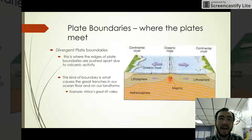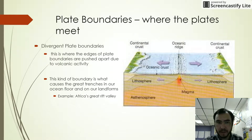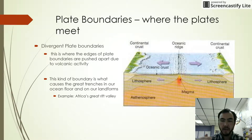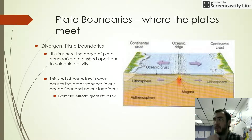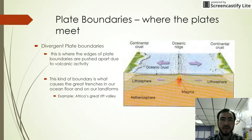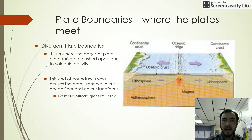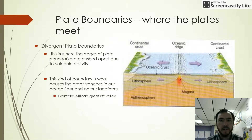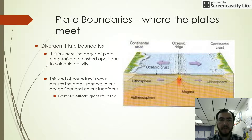Lastly, we have divergent plate boundaries. A divergent plate boundary is where the edges of the plates move away from each other. On one side of a plate, while plates are being pushed together, they're moving away on the other side. This creates gigantic rifts, and the most popular one might be Africa's Great Rift Valley, down near Mozambique — a gigantic rift in southern Africa.